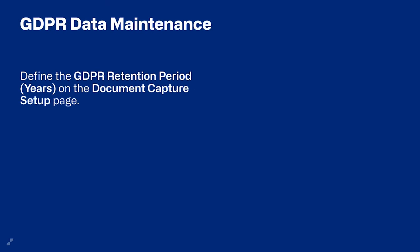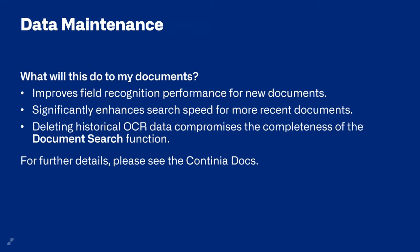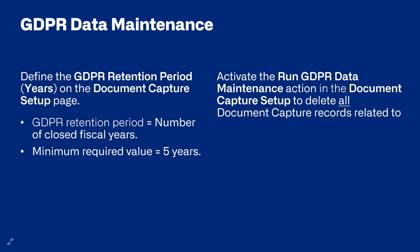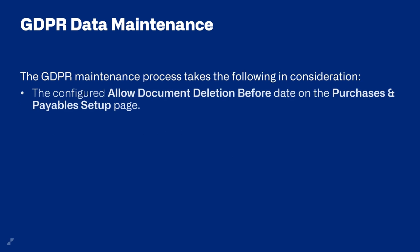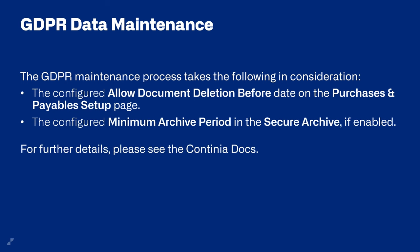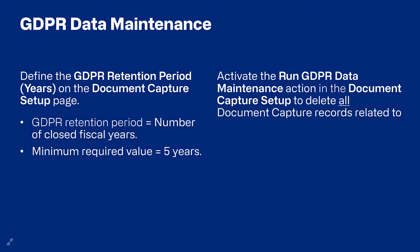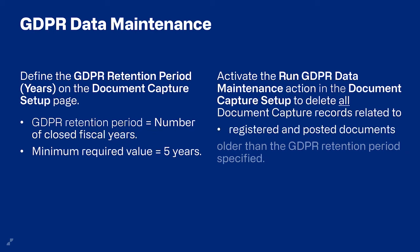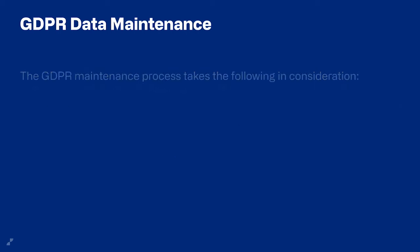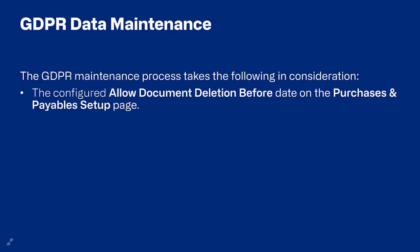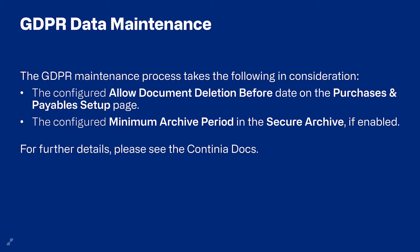For the GDPR retention period, we also have a specific retention period in years, with a minimum required value of five years hardcoded — you can set 10 or 20 years if you wish. When you run the GDPR data maintenance, it deletes all DomoCapture-related data for registered and posted documents older than the GDPR period specified. The GDPR maintenance process also looks at the 'Allowed Document Deletion Before Date' in the Purchase and Payables Setup page, and the minimum archive period in the Secure Archive.